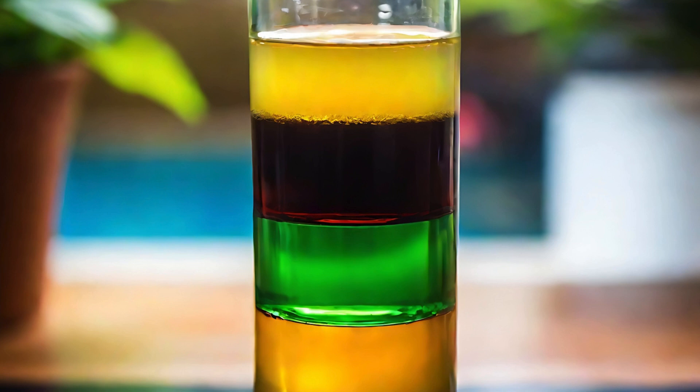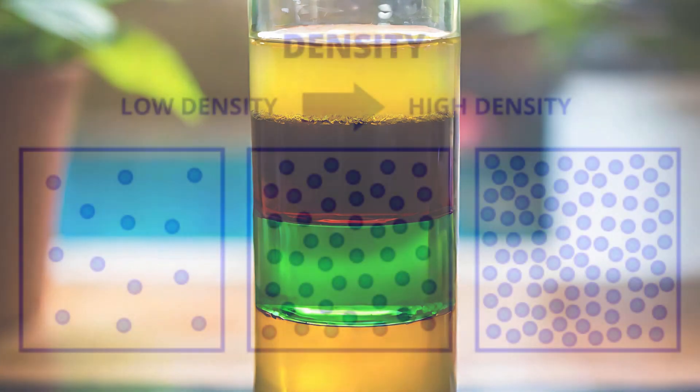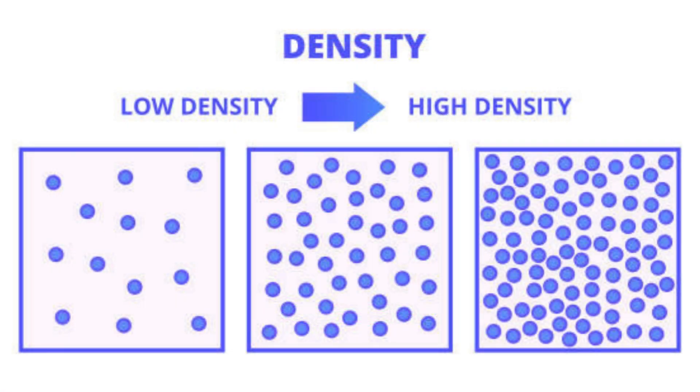By understanding the concept of density, we can explain why these liquids formed separate layers instead of mixing together. The differences in density between the liquids caused them to form separate layers, with the densest liquid at the bottom and the least dense liquid at the top.